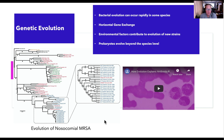Evolution is really based on changes in genetic patterns. This is referred to as horizontal gene exchange, and bacteria utilize three different forms of bacterial gene exchange: conjugation, transformation, and transduction.